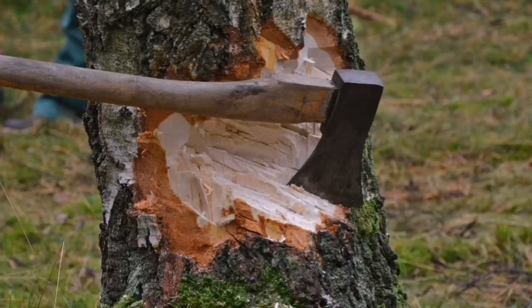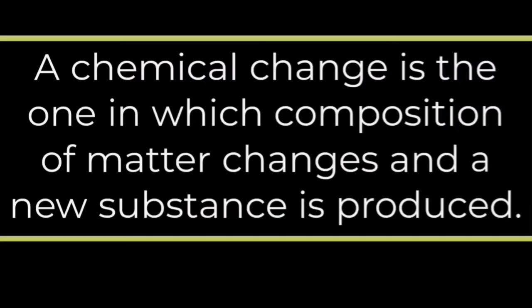Another example of a physical change is the cutting of wood to convert it into some article like a chair or table. The composition of the wood and that of the chair remains the same — just a small change in state takes place. So that is a physical change. On the contrary, a chemical change is one in which the composition of matter changes and a new substance is produced.